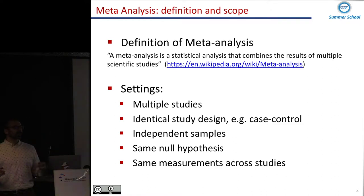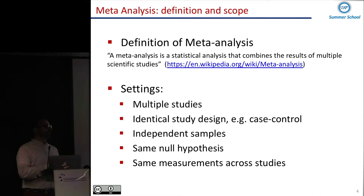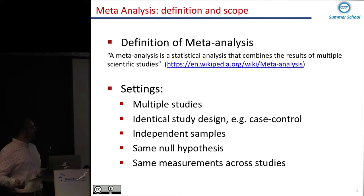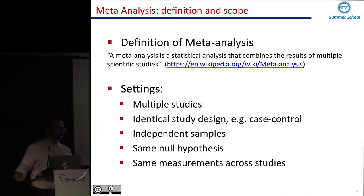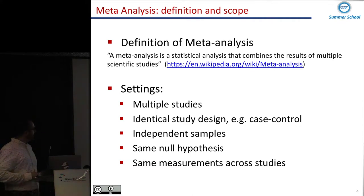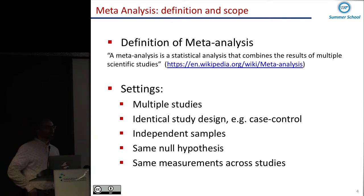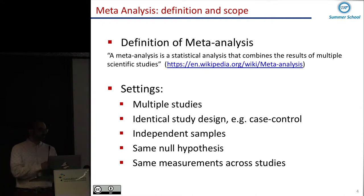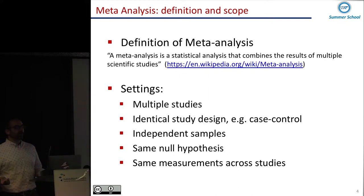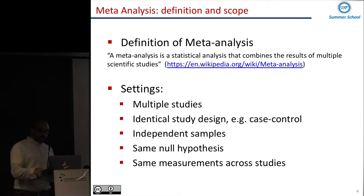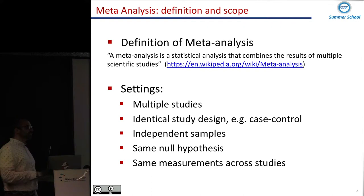You essentially replicate the same identical study in another study, like in Madrid or somewhere else. You have multiple studies that are essentially studying the same hypothesis — for example, how expression affects some type of disease. They have the same study design and are performed on different samples. You may get different results: in one study the odds ratio of the disease given a certain mutation is 0.2, and in another study it's 0.4. So what is the truth? This is essentially the scope of meta-analysis — combining different studies in order to have a better estimation of the effect you are studying.